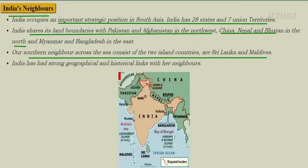India occupies an important position in south Asia. It has 28 states and 7 Union territories. It shares land boundaries with Pakistan and Afghanistan in the northwest, China, Nepal, and Bhutan in the north, and Myanmar and Bangladesh in the east. Southern neighbors across the sea consist of two island countries: Sri Lanka and Maldives. India also has strong geographical and historical links with its neighbors, as seen in the image showing India's neighboring land and sea boundary countries.